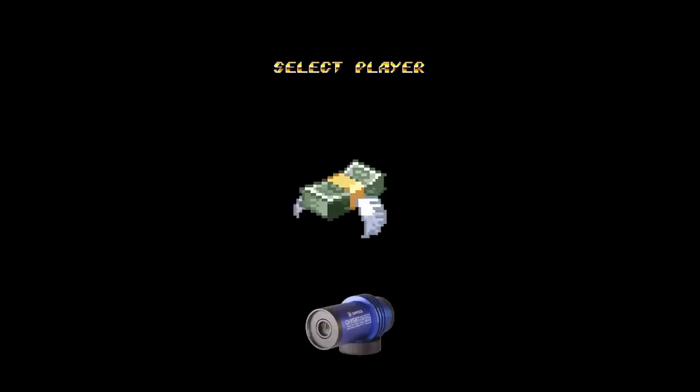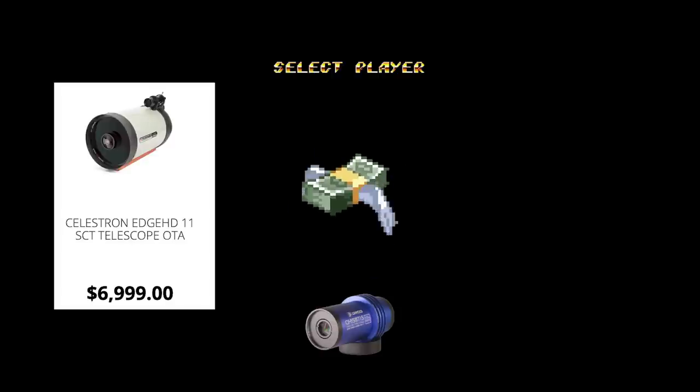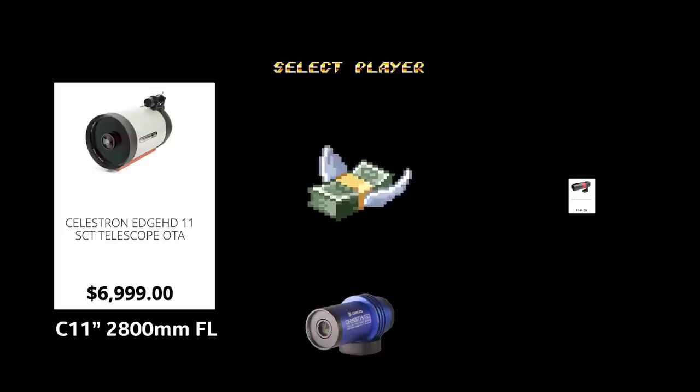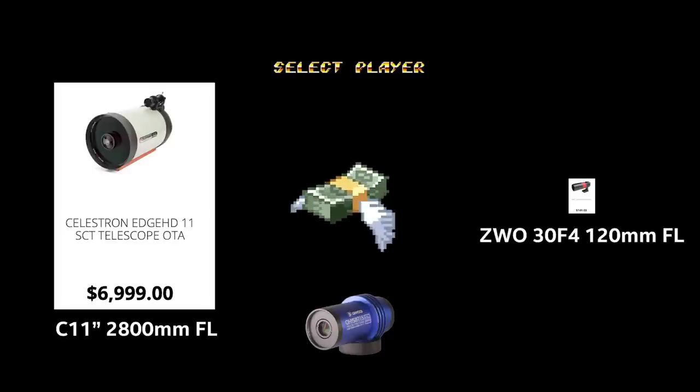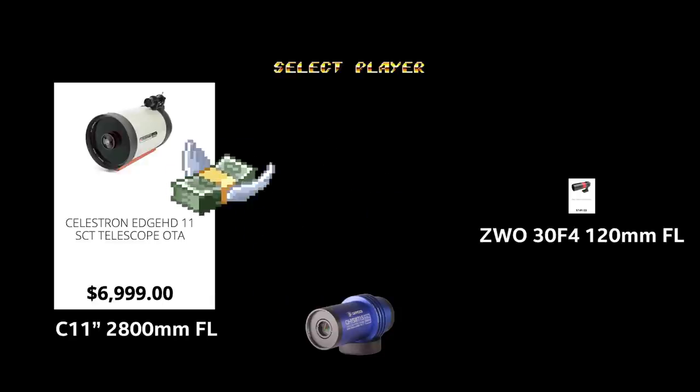Okay, would you rather I put the QHY-715C on this $7,000 Celestron 11-inch Edge HD with 2800mm focal length, or would you rather this tiny, little, inexpensive ZWO with a focal length of 120mm? Yeah, I thought so.